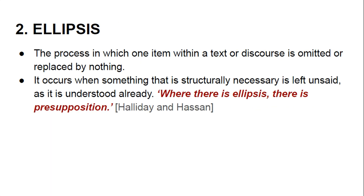Ellipsis is the second type of grammatical cohesion. It is the process in which one term within a text or discourse is omitted or replaced by nothing. It occurs when something that is structurally necessary is left unsaid because it is already understood. As Halliday and Hasan say: where there is ellipsis, there is presupposition.